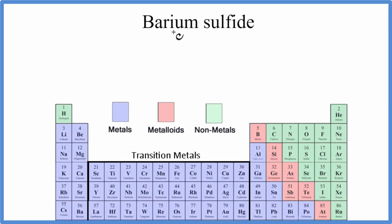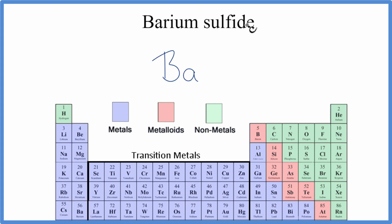To write the formula for barium sulfide, we'll go to the periodic table. Barium, that's Ba. And then sulfide, we're talking about sulfur, that's S.